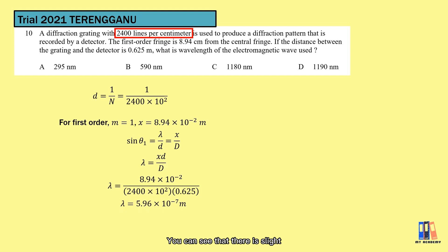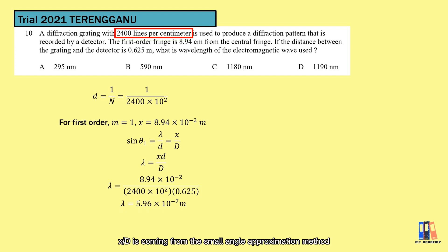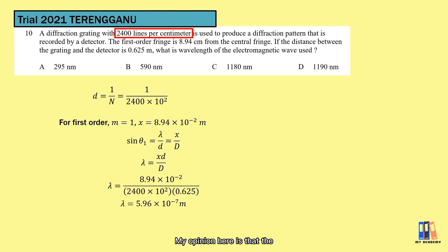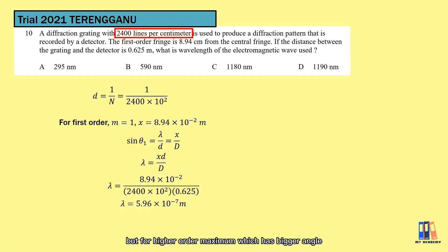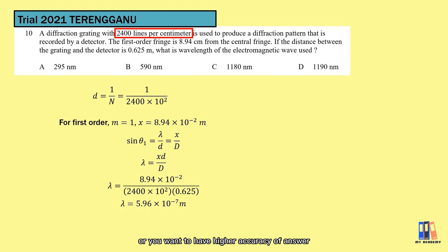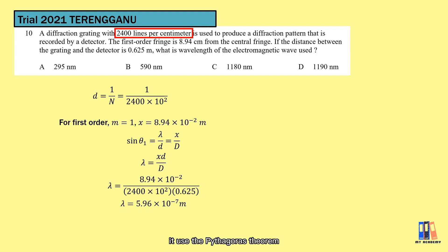There is a slight difference in the options provided, which is 590 nm. This is because x/D comes from the small angle approximation method. If we calculate the angle of diffraction, it is about 8 degrees for the first order maximum. In my opinion, the method is still valid for small angles of diffraction. But for higher order maxima, which have bigger angles, the method is no longer valid because it will produce a bigger error. To solve for higher order maxima or to have higher accuracy, you can refer to the answer scheme provided in the Google Drive, which uses the Pythagorean theorem and trigonometric functions without any estimation.